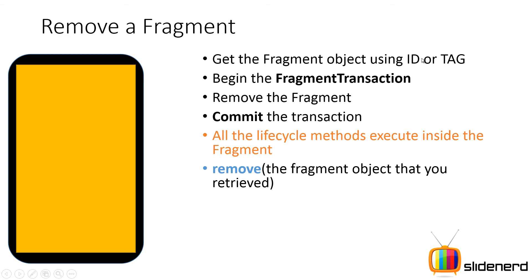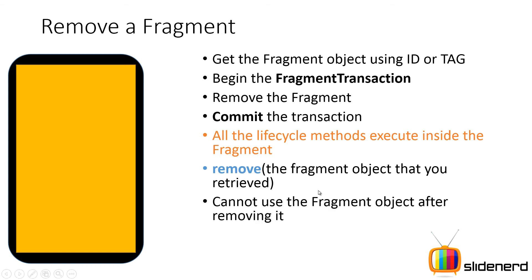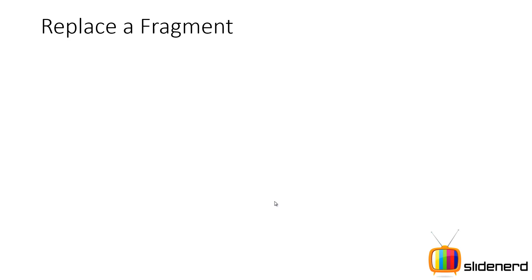The remove method just takes the object you want to remove, which is why in step one you first find the object. One more thing to notice: you cannot use the fragment object after removing it because its UI is completely destroyed and the fragment is no longer associated with the activity. However, it may or may not be null — remember the part about it existing as a Java object is different from it being linked with the activity.